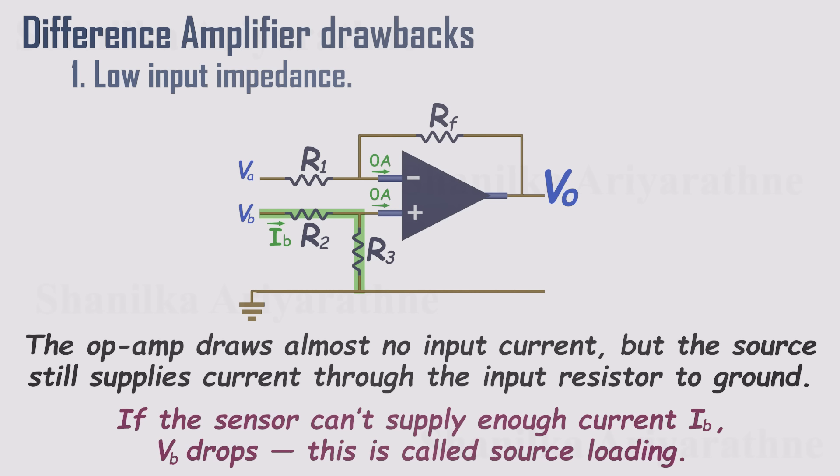To avoid loading, we want the amplifier's inputs to draw as little current as possible. In other words, we need high input impedance. And that's something a basic differential amplifier just doesn't give us.